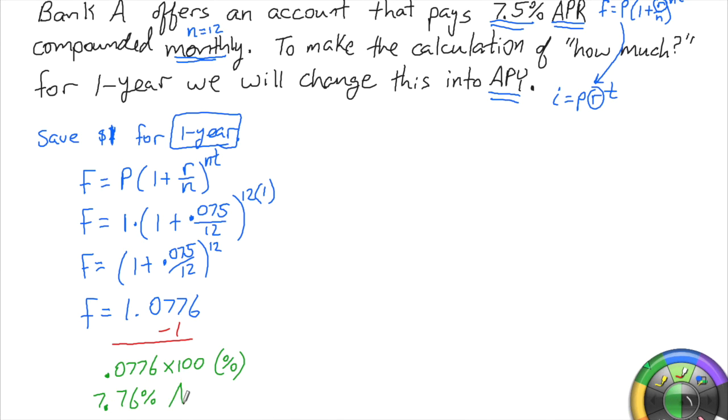This is what's considered the APY. There is a formula for it, but if it's not written anywhere, this is a perfectly fine way of getting to the answer. Save one dollar for one year, figure out the future value, get rid of one, and change it into a percent.